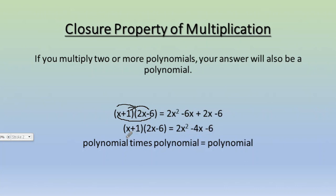So in this case, (x + 1) was a polynomial. (2x - 6) was a polynomial. And then 2x² - 4x - 6 was also a polynomial. So when I took a polynomial times a polynomial, my end result was also a polynomial. Now just to go back to the vocabulary we went over earlier, (x + 1) would be a binomial because it had 2 terms. (2x - 6) would be a binomial because it also had 2 terms. And 2x² - 4x - 6 would be a trinomial because it had 3 terms, all of which are different types of polynomials, which just means more than one term.